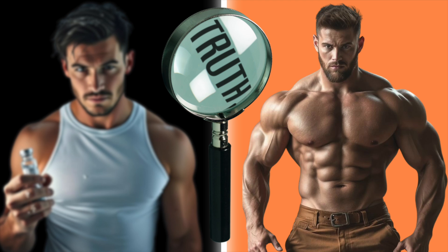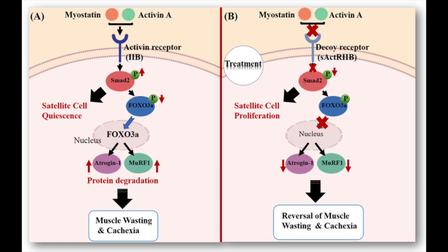The idea behind injecting compounds that resemble follistatin proteins and antagonize myostatin is obviously to increase muscle mass and subsequently strength. When we think about clinical utility, muscle wasting and degenerative conditions come to mind. The action of follistatin is essentially through preventing myostatin and another protein called activin from binding to what are called type 2 activin receptors. In a nutshell, activation of this pathway stimulates muscle degradation and features of muscle wasting — therefore, blocking the pathway would lead to the reverse, which is muscle hypertrophy.